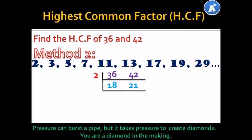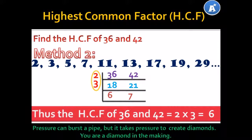So, let's look at the next prime number: 3. Can 3 go into 18 and 21 without leaving a remainder? Yes it can. So: 3 into 18 gives us 6, and 3 into 21 gives us 7. Now, there are no more prime numbers we can use to go into 6 and 7 without leaving a remainder. Therefore, the HCF of 36 and 42 can be found by simply multiplying the numbers we used: 2 times 3, which gives us 6.